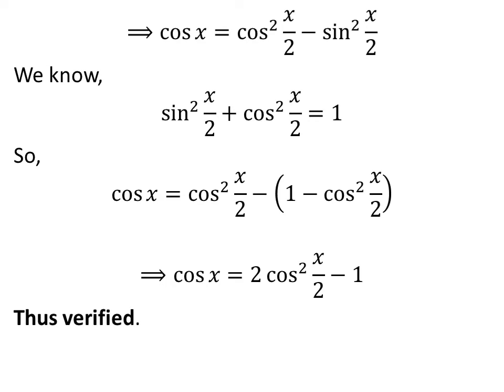Further simplification gives us cosine of x is equal to 2 times the square of cosine of half of x minus 1, hence verifying the identity.